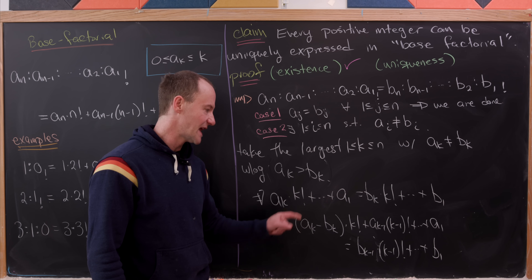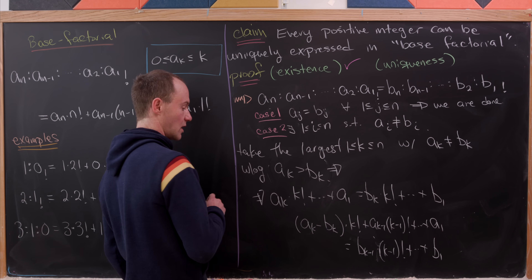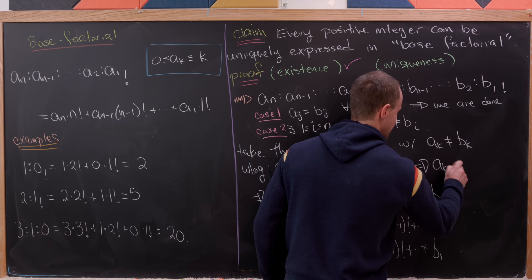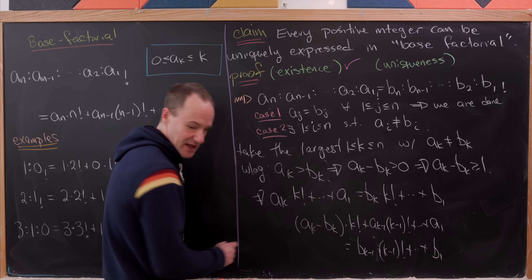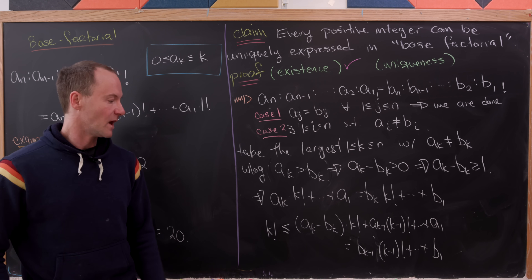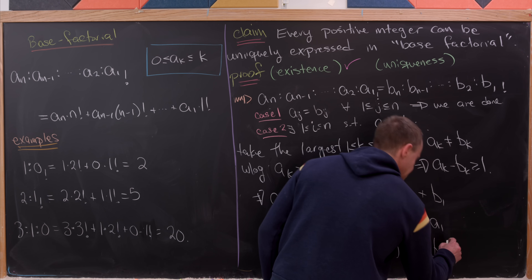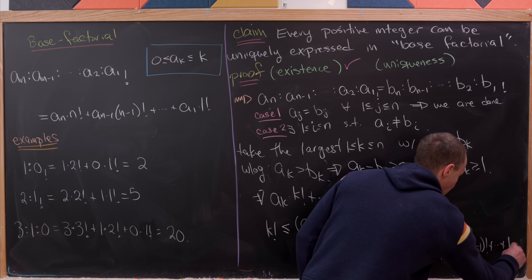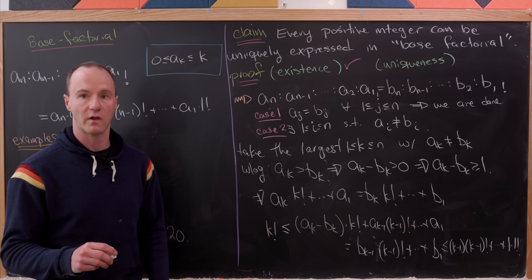Now, a_k − b_k is bigger than or equal to 1, because those two values are not equal, their difference is strictly greater than zero, and since they're positive integers their difference is at least 1. So the left-hand side has got to be bigger than or equal to k!. But the right-hand side is less than or equal to (k−1) times (k−1)! plus all the way down to 1 times 1!, replacing each b with its largest possible value.